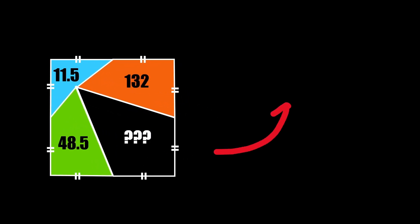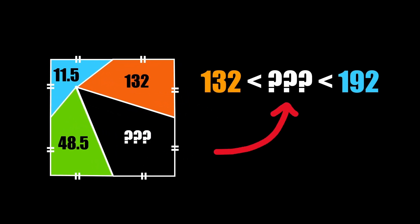Translating that into numbers we can say that our unknown area has to be a number greater than 132 and less than the sum of all the other areas which we found to be 192.